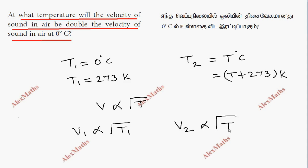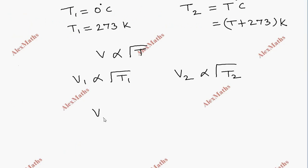Dividing these equations, V2 by V1 equals the square root of T2 divided by the square root of T1.